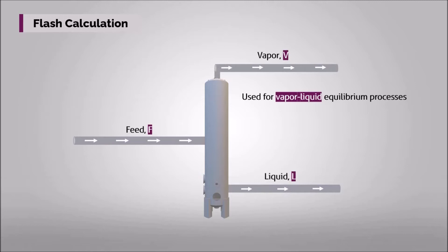Top vapor product and bottom liquid product leave the flash tank as separate streams. They are assumed to be in equilibrium with each other. In this case, more volatile components can be separated from less volatile components.